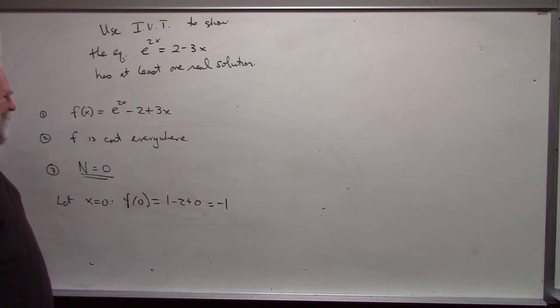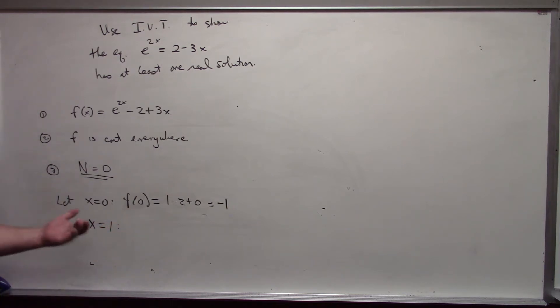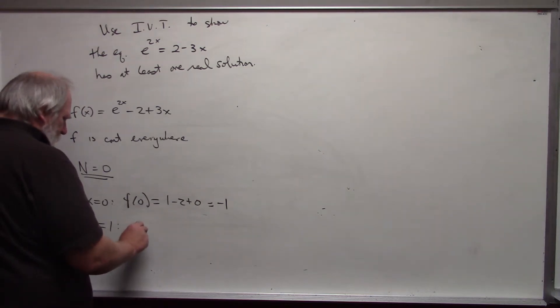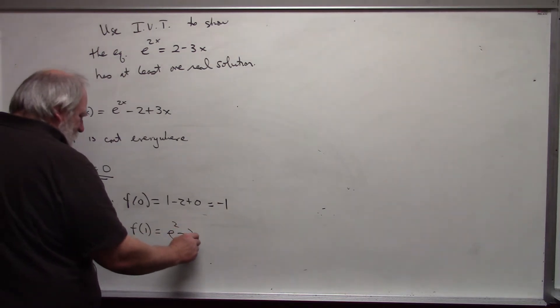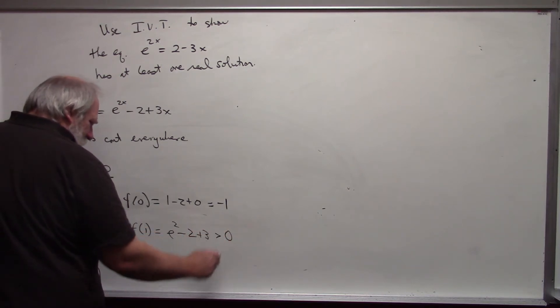f(1), you want to hopefully pick something that's relatively close to the first value that you pick, but f(1) in this case is e^2 - 2 + 3, which should be obvious, greater than zero.